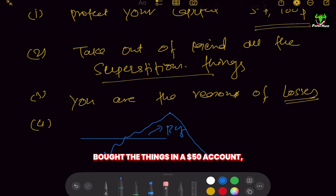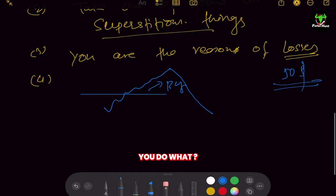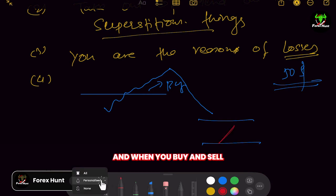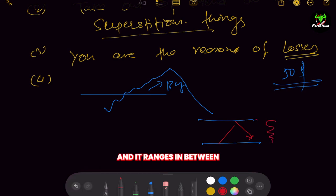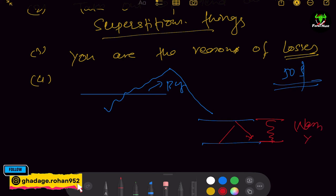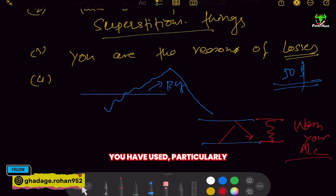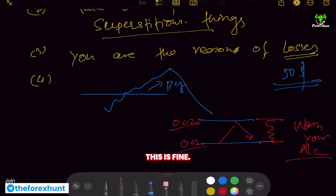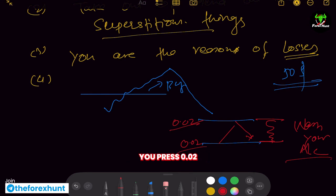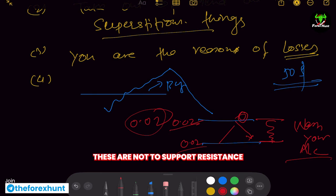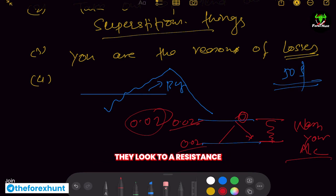In a $50 account, you place a buy and a sell. When you sell, the market goes up; when you buy, the market goes down — and it ranges until your account is washed. You may be using 0.02 lots, which is fine. In a $50 account you can survive a few times. But you press 0.02 at the resistance you marked — those are not the support and resistance where the market actually plays. The players with billions of dollars are not going to look at a simple support or resistance and place hundreds of lots.